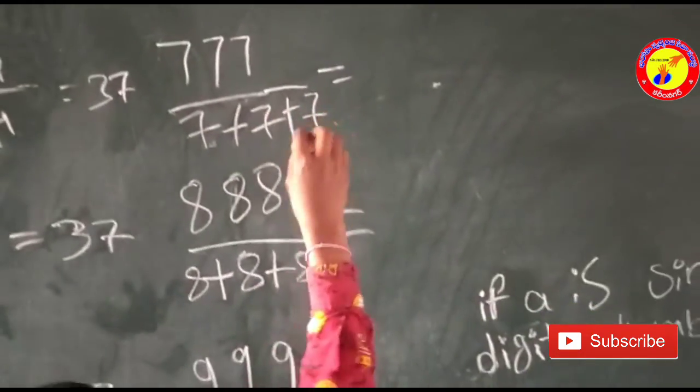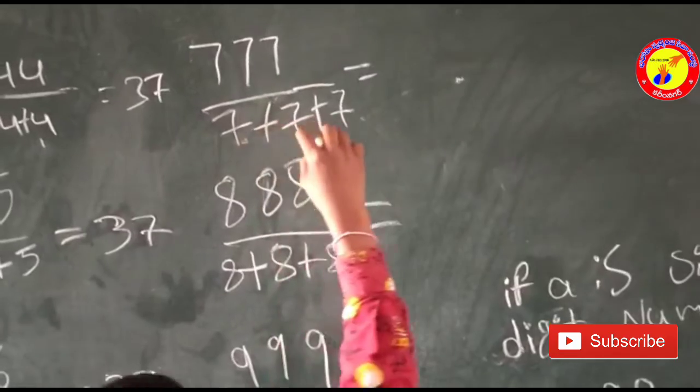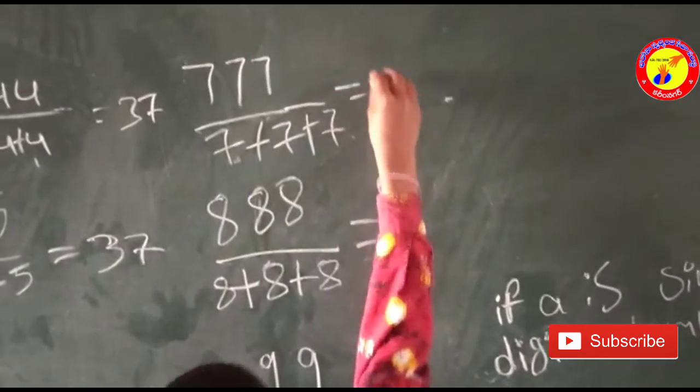777 divided by 7 plus 7 plus 7 is equal to 37.